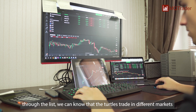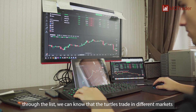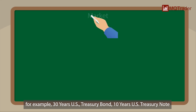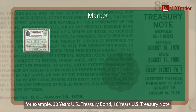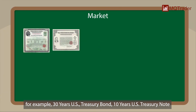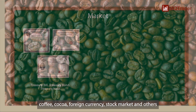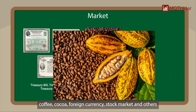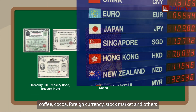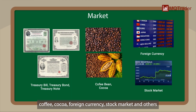Through the list, we can see that the turtles traded in different markets. For example: 30-year US Treasury bonds, 10-year US Treasury notes, coffee, cocoa, foreign currencies, stock market indices, and others.